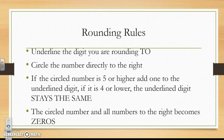Here are some rounding rules or guidelines to help you with rounding. First, you need to underline the digit you are rounding to. Circle the number that is directly to the right of your underlined number. If the circled number is 5 or higher, add 1 to the underlined digit. If the circled number is 4 or lower, the underlined digit stays the same. The circled number and all numbers to the right become zeros.